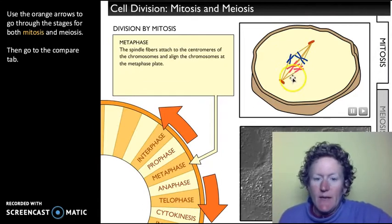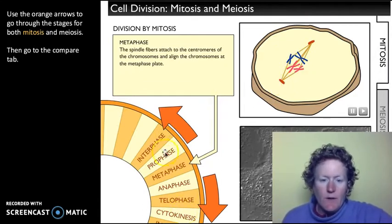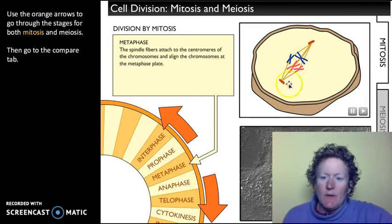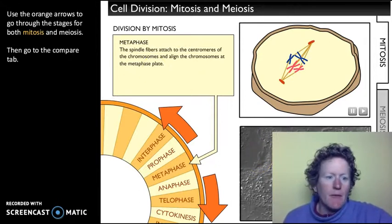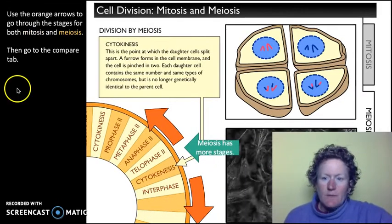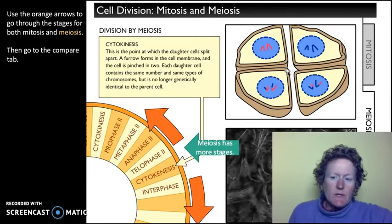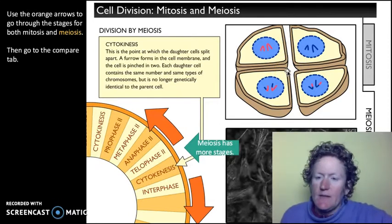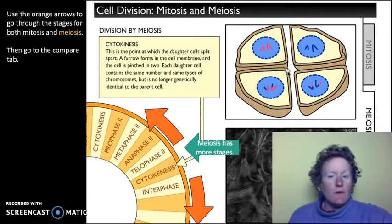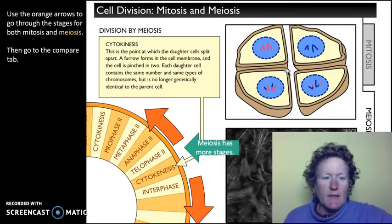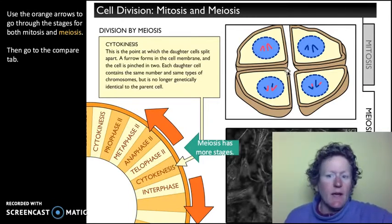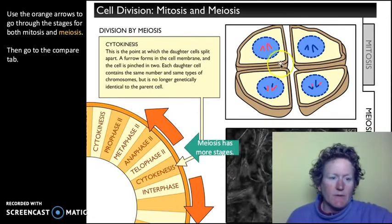Mitosis is used for body cells and it has fewer phases. You'll see the phases click by as the cell up here goes through them, or the real cell down here goes through them. Here's meiosis — you can see it has more phases and it's going to go through more things and turn into more cells. Meiosis is just for creating sex cells — that's eggs and sperm. Ladies, you were born with all of your eggs. Guys, you're going to keep doing meiosis for quite some time.